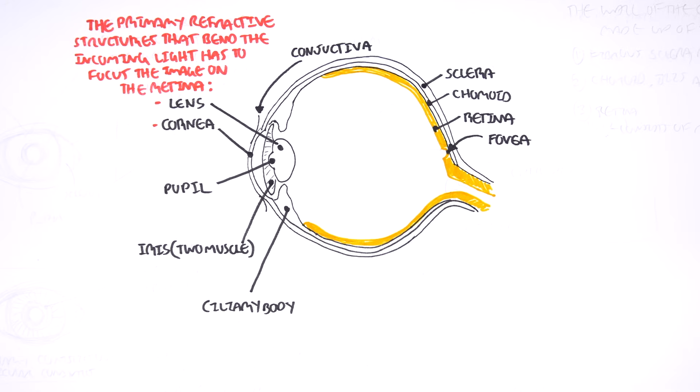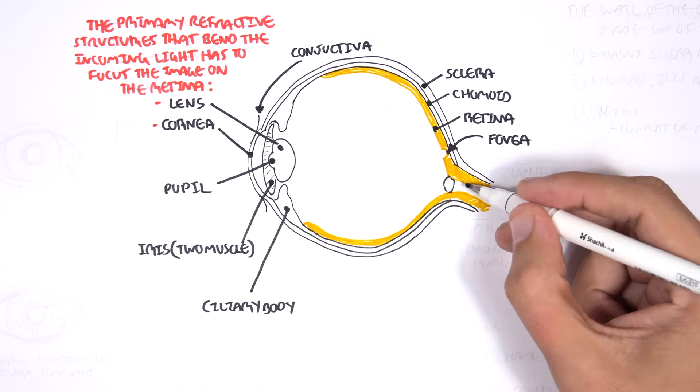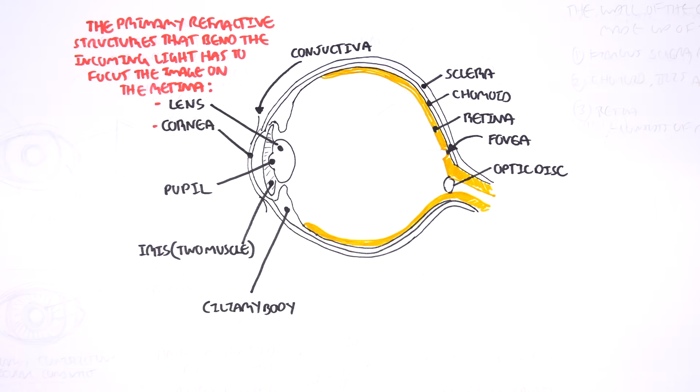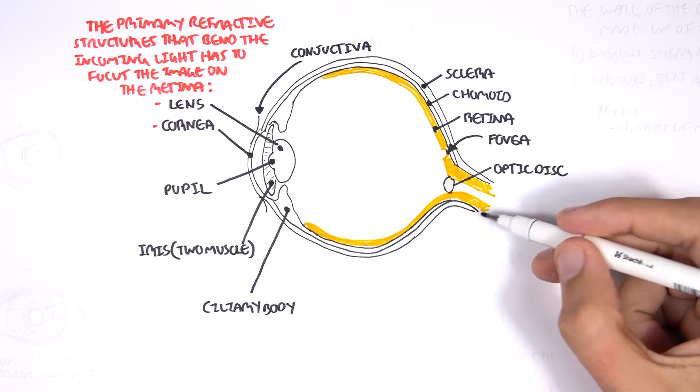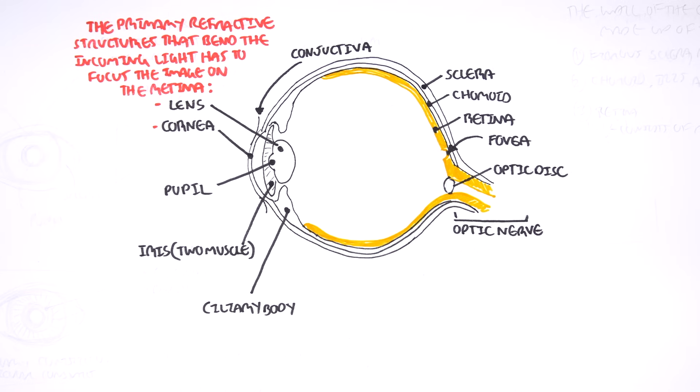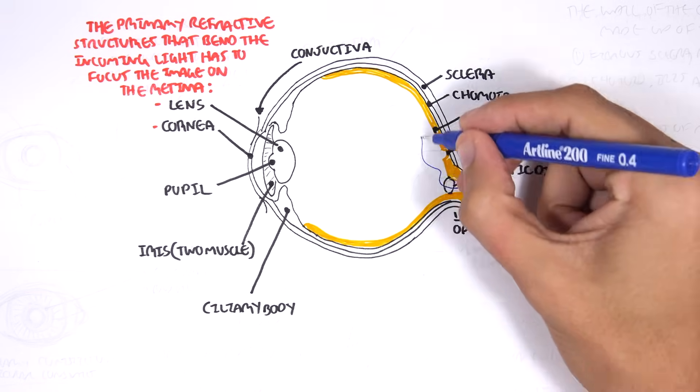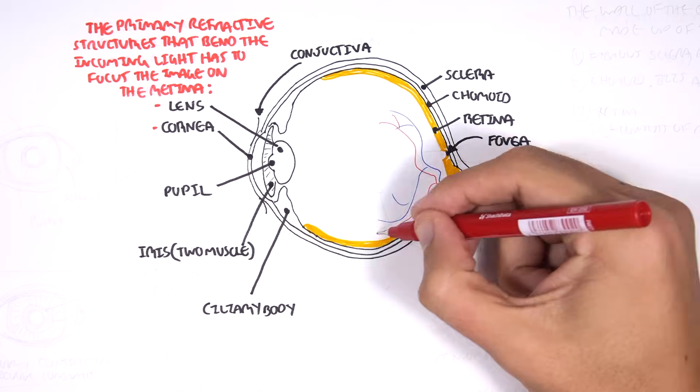The retina captures images through the photoreceptors. These images then get sent along nerve fibers that travel through the optic disc and form the optic nerve, which is your cranial nerve number two. Other structures that pass the optic disc are the retinal arteries and the veins.